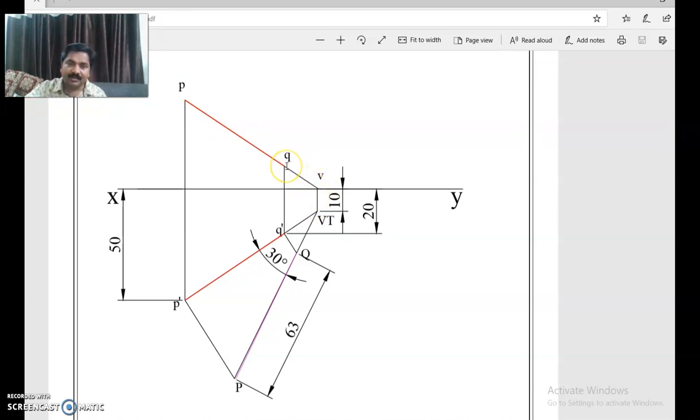And now we are asked to find out the true length. True length is not shown here. Anyway, true length is already found out here. So that is no need of finding extra. So if you want to find theta, what do you have to do?